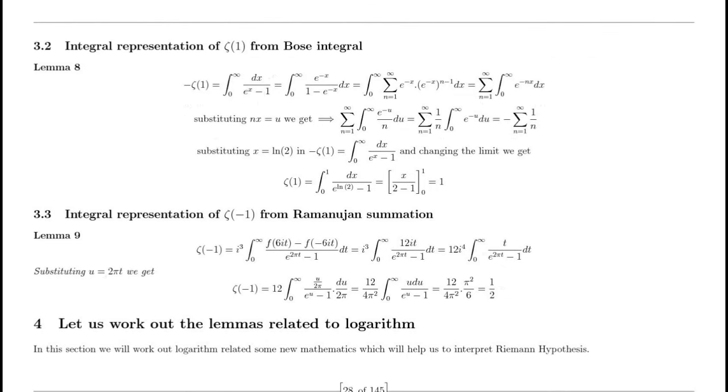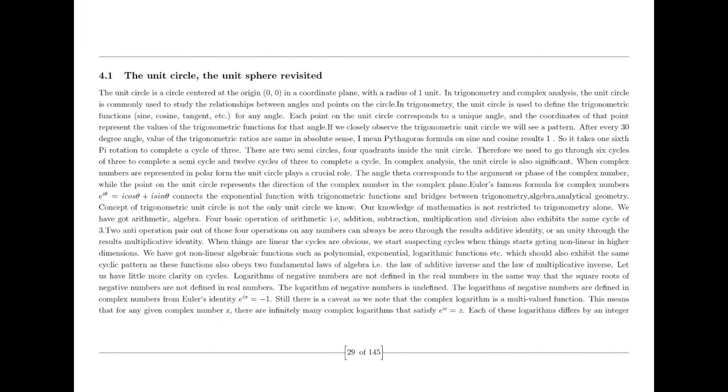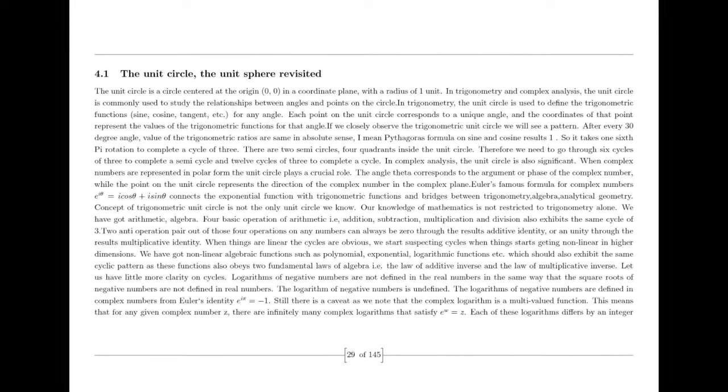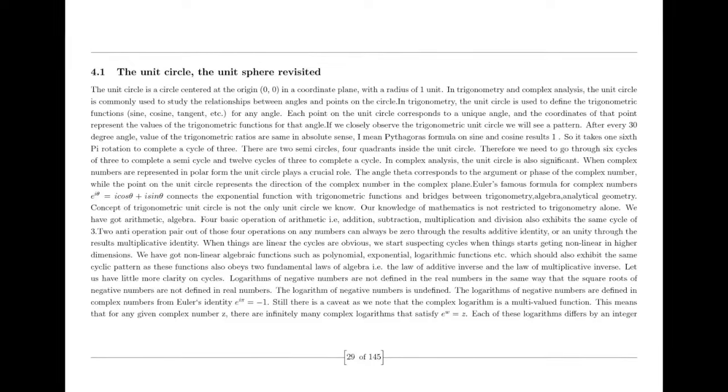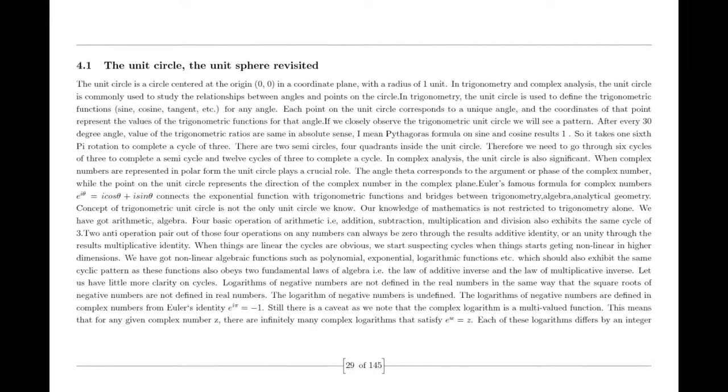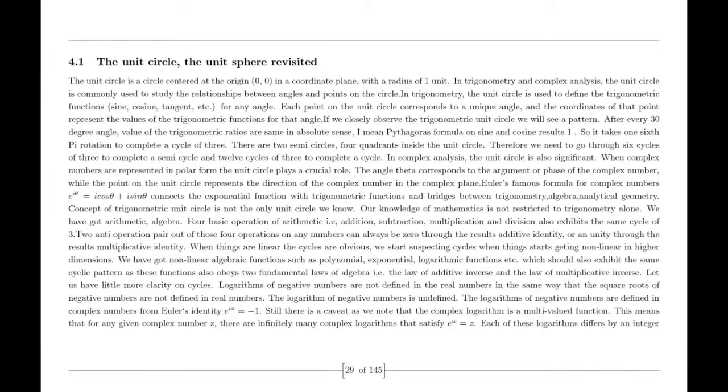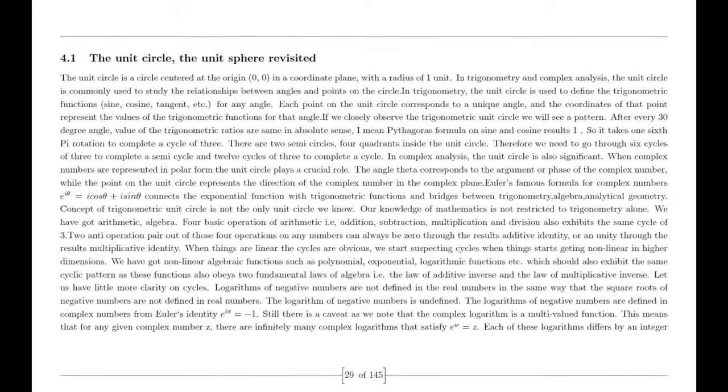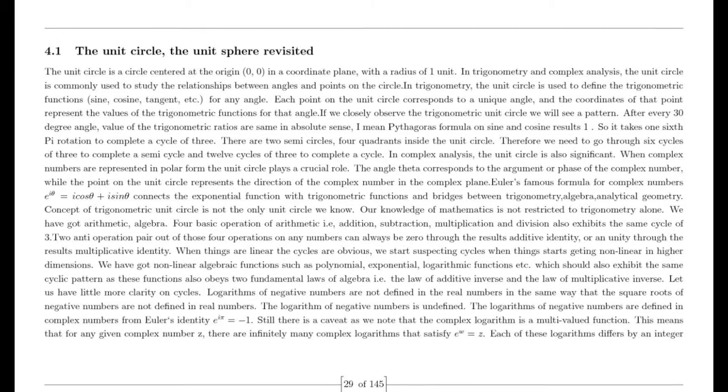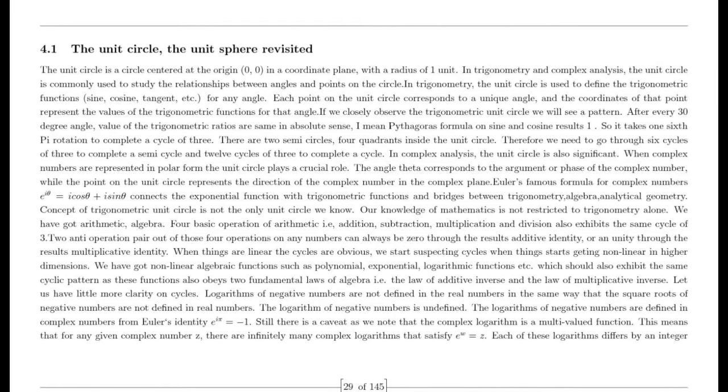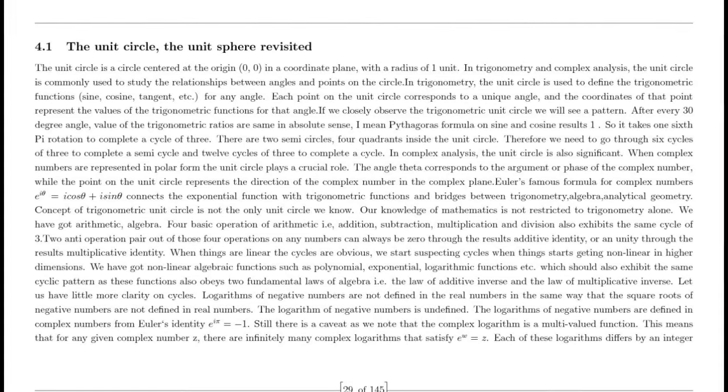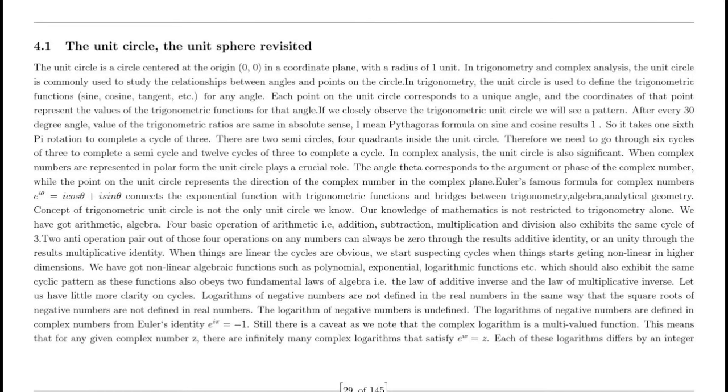The fine structure constant is dimensionless and plays a crucial role in various areas of physics, including quantum electrodynamics. On the other hand, the Charles's ratio is a constant that arises from the ideal gas law and relates the change in volume of an ideal gas to its change in temperature at constant pressure. Approximately, this ratio is close to 1/273. Although the Charles's gas constant is not considered a fundamental constant, it should be regarded as more fundamental in the middle scale in which we live. Mathematically, it is closely related to the reciprocal of π/4 multiplied by Euler's number e, the base of the natural logarithm.